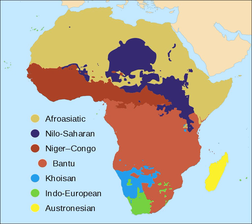Most languages spoken in Africa belong to one of three large language families: Afroasiatic, Nilo-Saharan and Niger-Congo. Another hundred belonged to small families such as Ubangian and the various families called Khoisan, or the Indo-European and Austronesian language families mainly spoken outside Africa — the presence of the latter two dates to 2,600 and 1,500 years ago, respectively. In addition, the languages of Africa include several unclassified languages and sign languages.